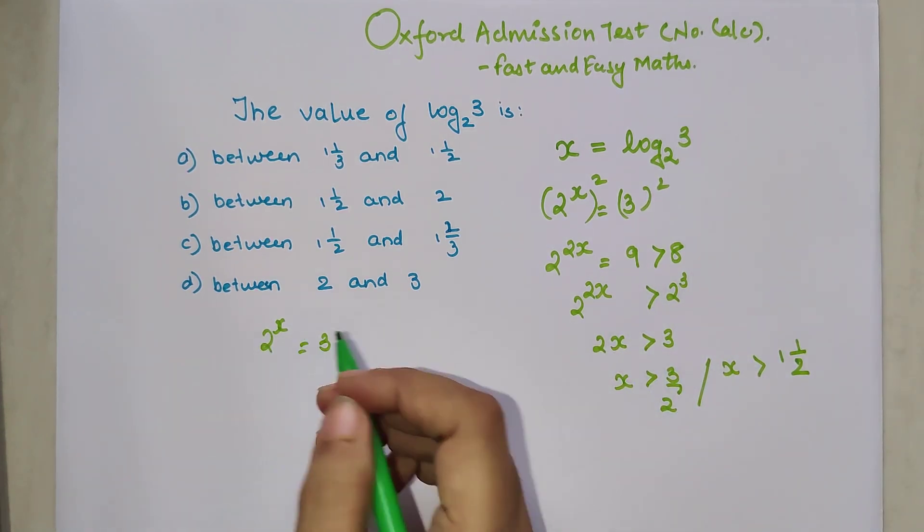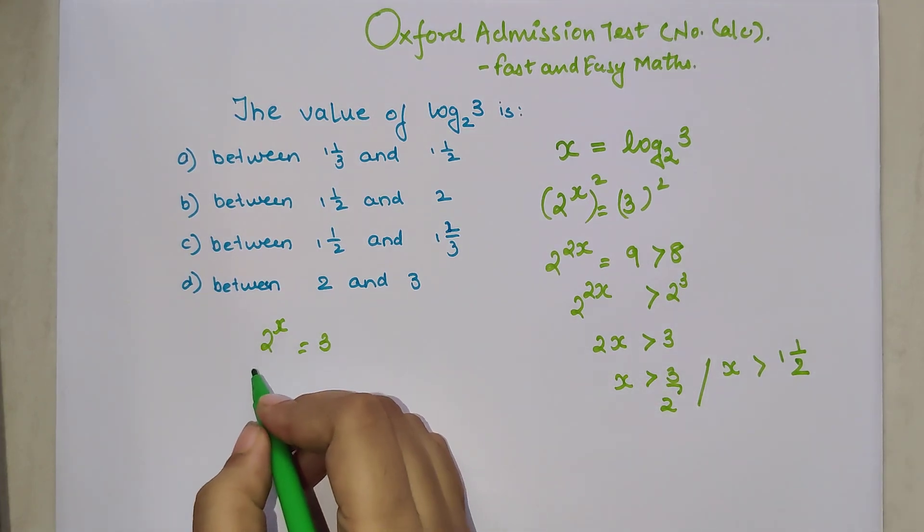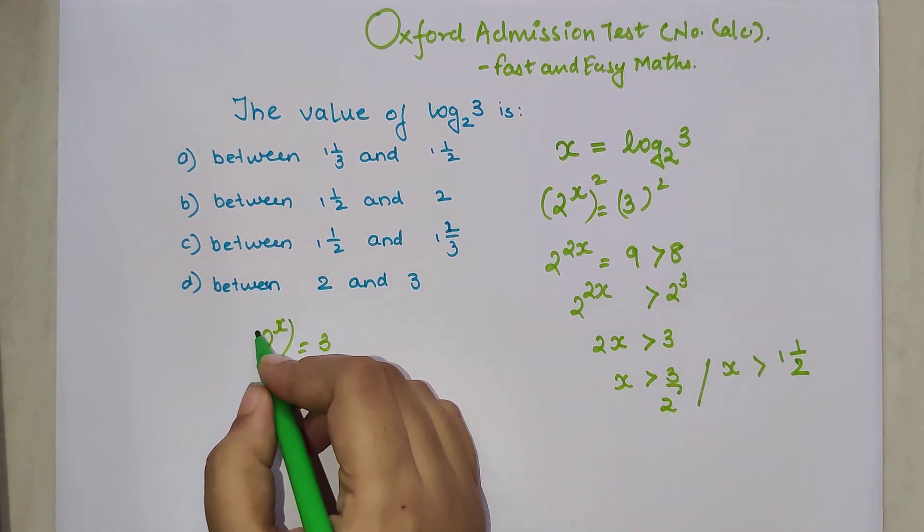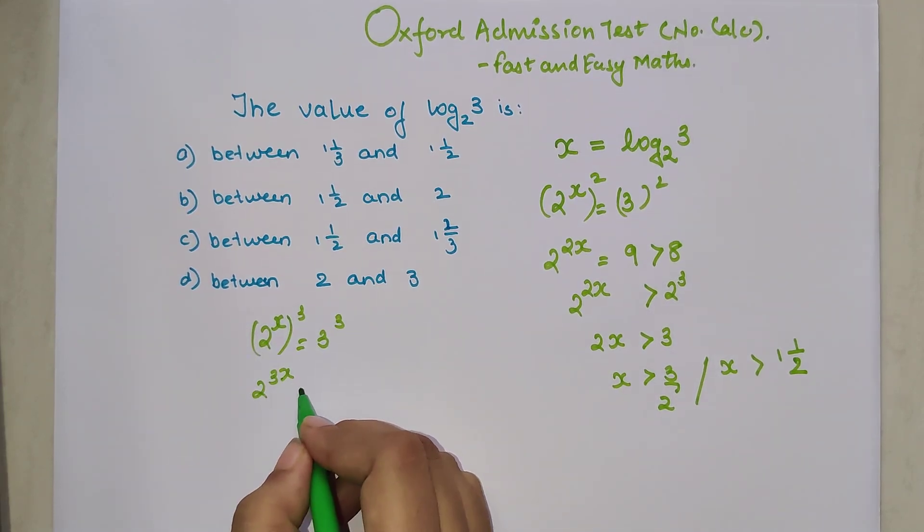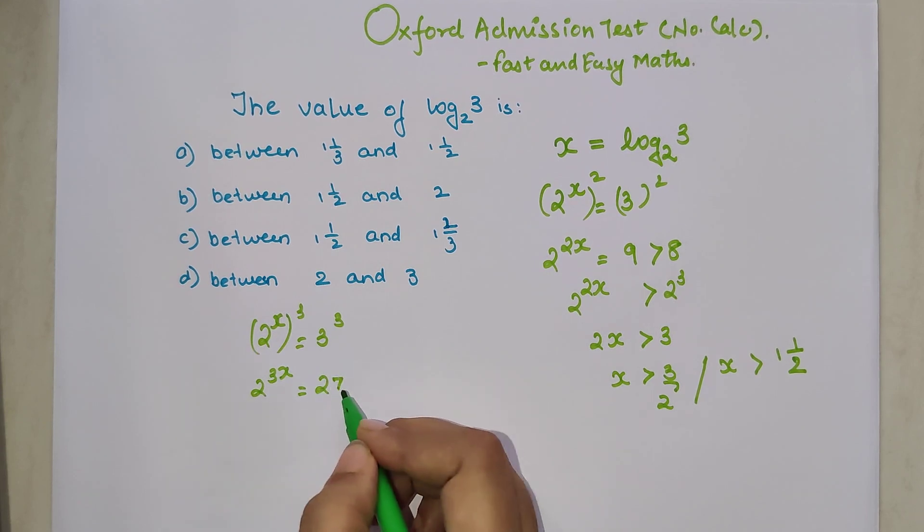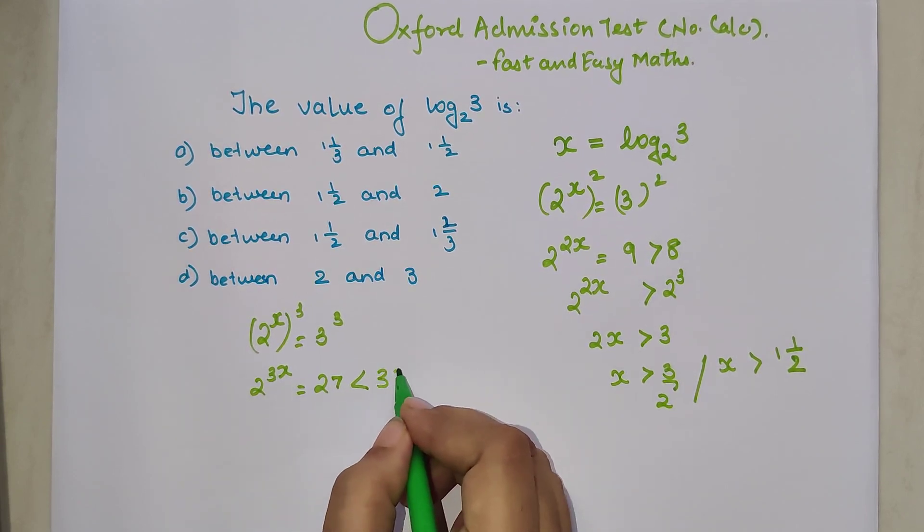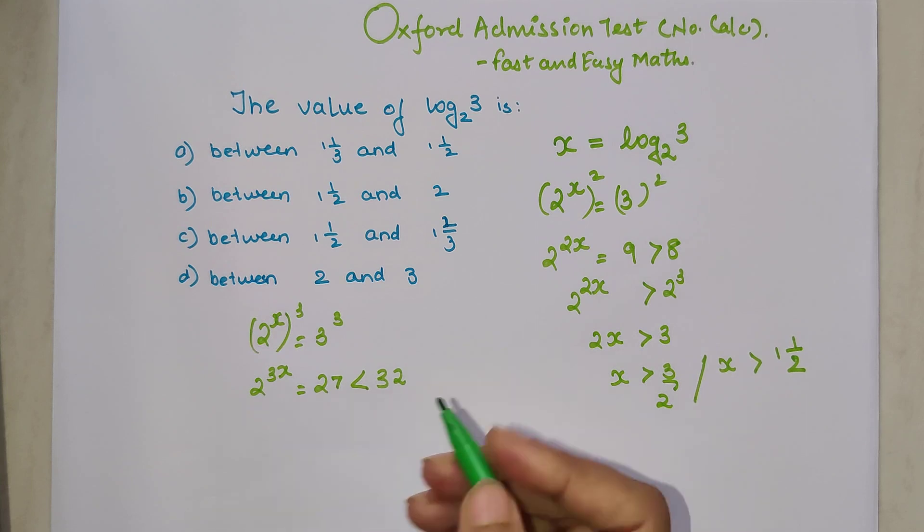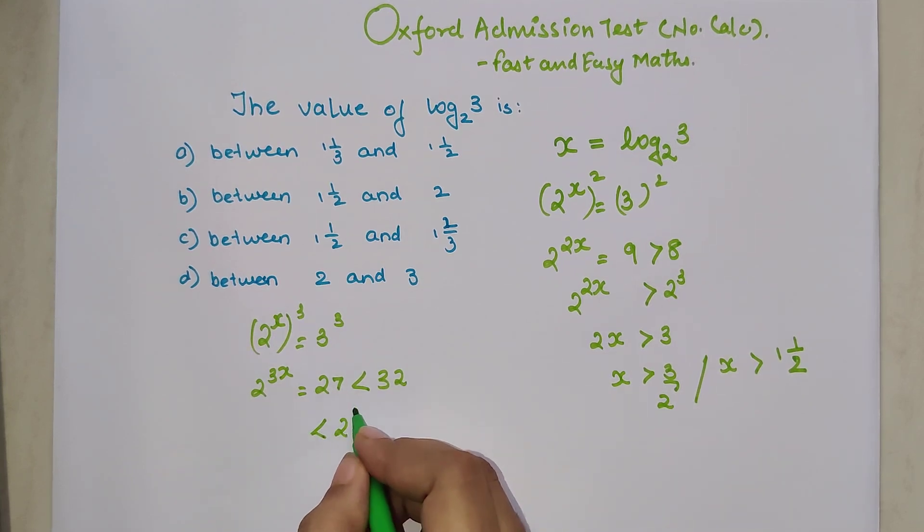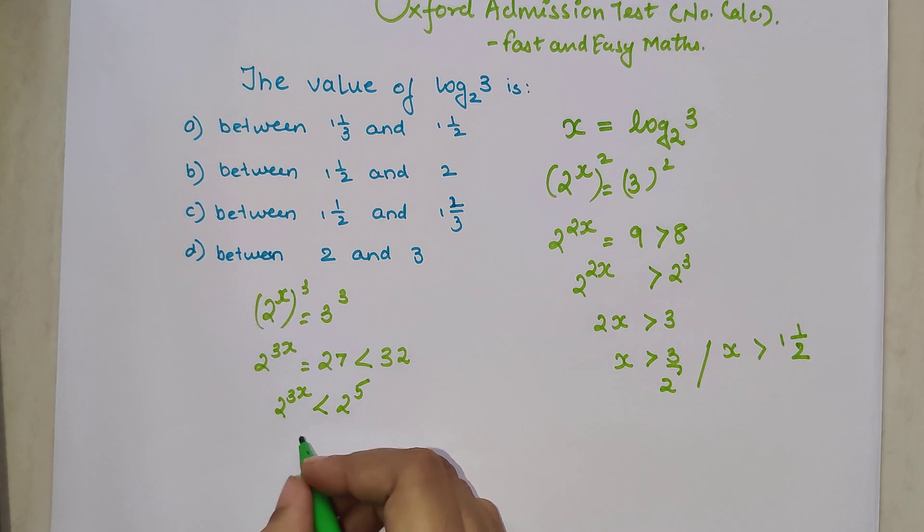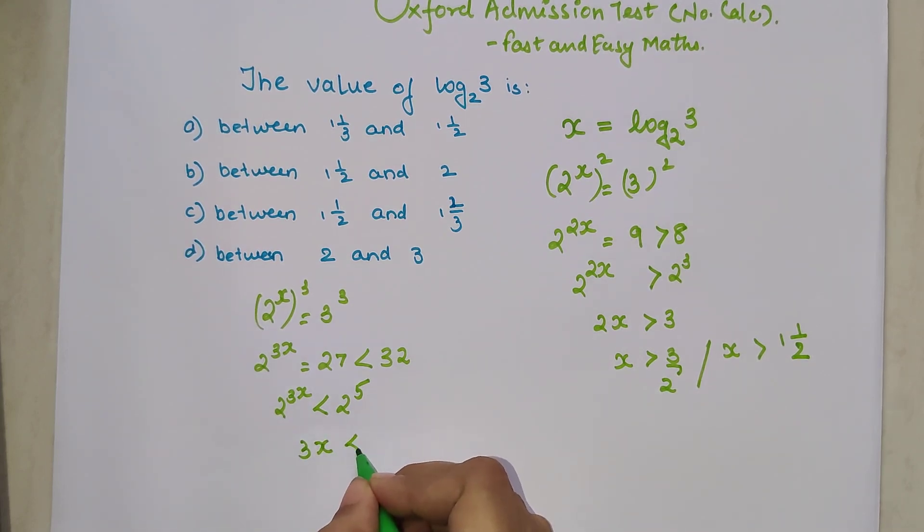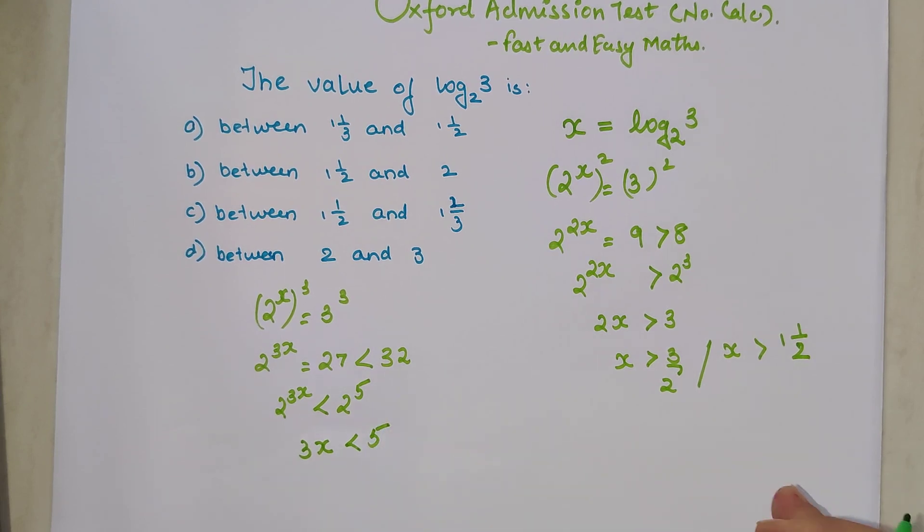When I do that, I am cubing over here. I get 2 raised to 3x equals 27. Now can I say that is less than 32? And I know that 32 is nothing but 2 raised to 5. So I can say 2 raised to 3x is lesser than 2 raised to 5. So now since the bases are same, I can directly say that 3x is lesser than 5.